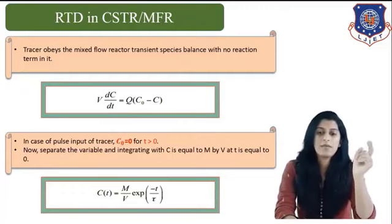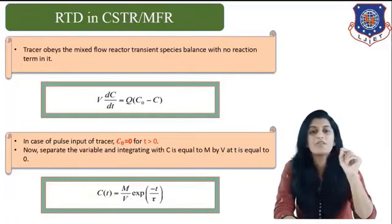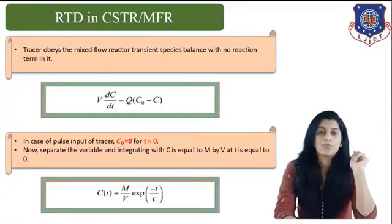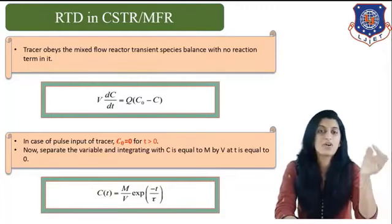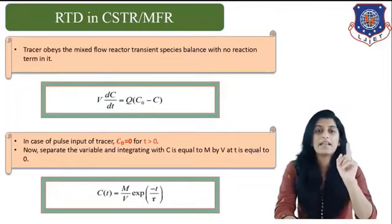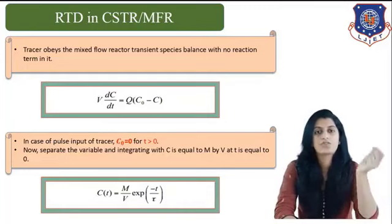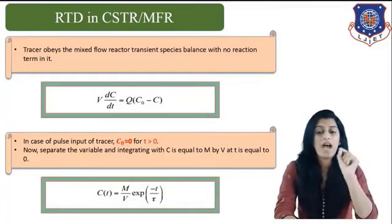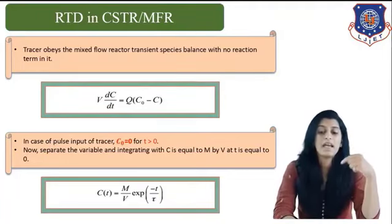For time greater than 0, the value of C₀ equals 0 because we are using pulse input — the injection happens only once at t = 0, so after that moment the inlet tracer concentration is zero. Separating variables and solving, we get: C(t) = (M/V)·exp(−t/τ), where M is the amount of tracer injected and τ is the space time.